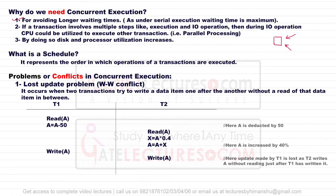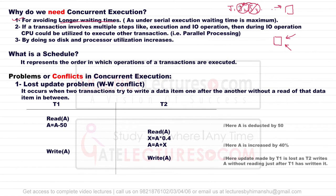The first reason we need concurrent execution is to avoid longer waiting times. In serial execution, if you have jobs J1, J2, J3 and so on, you execute them one after another — after finishing J3 you start J2, after finishing J2 you start J1. If these jobs are not overlapping with each other, there is no problem.